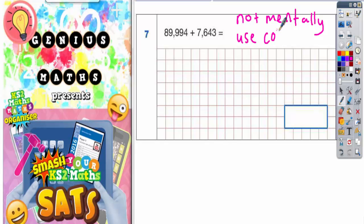Okay, so we've got to make sure that we write our numbers out lined up in the correct column. So let's start by putting 89,994. Now your comma is going to separate your thousands from your hundreds. So actually it would be a good idea to line the commas up first. So if we line the comma up then we've got 7,643.